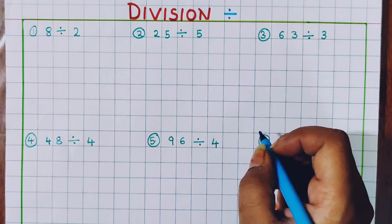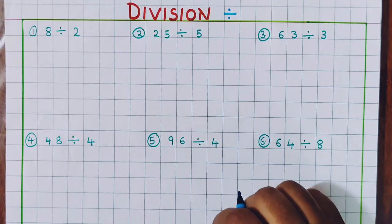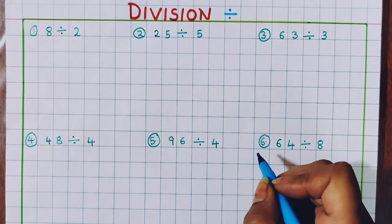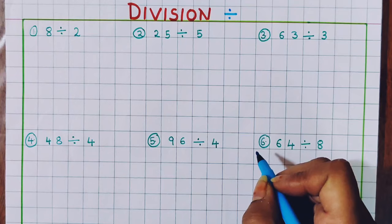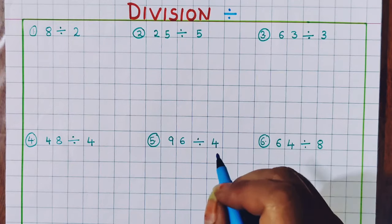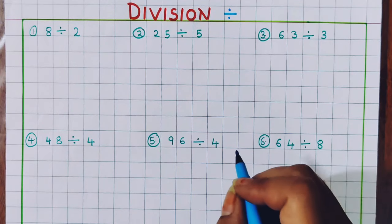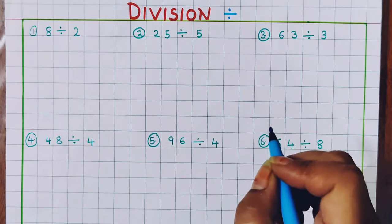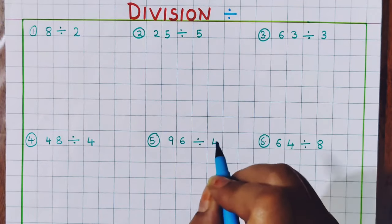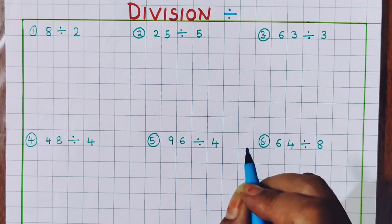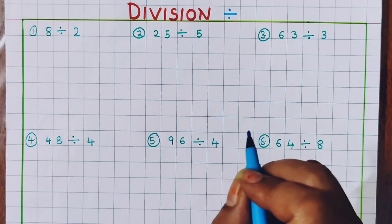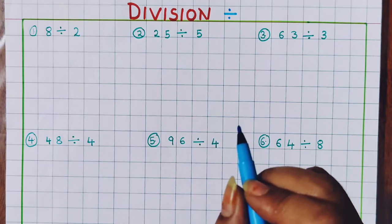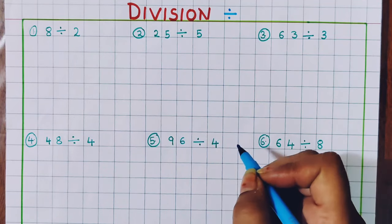Now if I have 4 chocolates and if I have to divide them among 2 people, then how much will each person get? Each person will get 2 chocolates. So I am dividing over here.